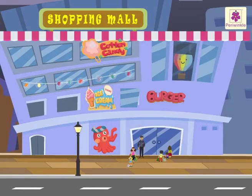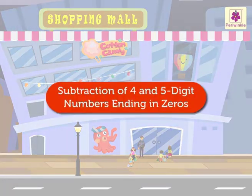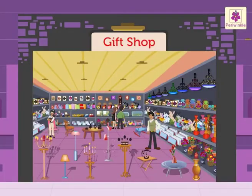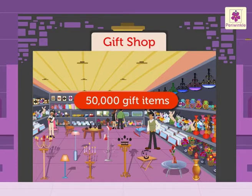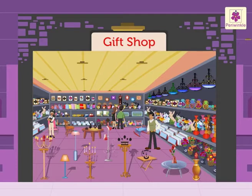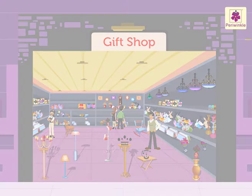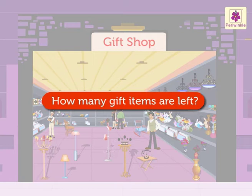Hello friends, come let us learn subtraction of 4 and 5 digit numbers ending in zeros at this shopping mall. This gift items section has 50,000 gift items, out of which 46,743 were sold. How many gift items are left?